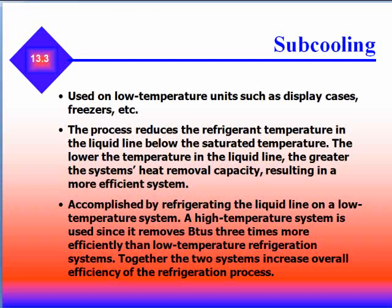Subcooling is used on low temperature units such as display cases or freezers. The process reduces refrigerant temperatures in the liquid line below the saturation temperature. The lower the temperature in the liquid line, the greater the system's heat removal capacity, resulting in a more efficient system. Subcooling is accomplished by refrigerating the liquid line in a low temperature system using a high temperature system, since it removes BTUs three times more efficiently than low temperature refrigeration systems.